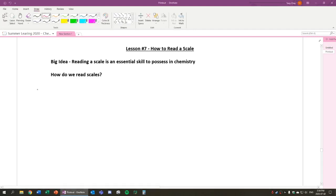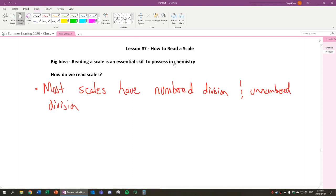We know that most scales have what we call a numbered division and an unnumbered division. The numbered division is what you see as a number. For example, if you read a thermometer, it's the numbers 1, 2, 3, 4, 5, 6, 7, 8, 9, 10, and so forth. The unnumbered division are just the ones that have lines. There's no number attached to them, but we know what they mean still.